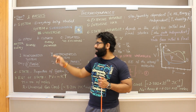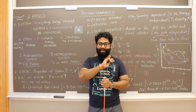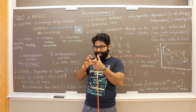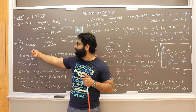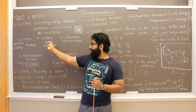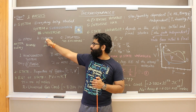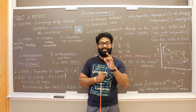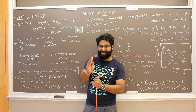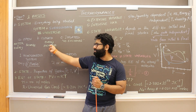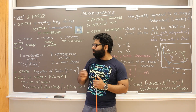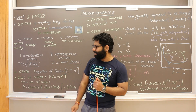On the extreme opposite, any system which allows neither matter nor energy exchange is an isolated system. What comes in between is a closed system — one in which there is no matter exchange between the system and the surrounding, but there is an energy exchange. That kind of system is called a closed system.